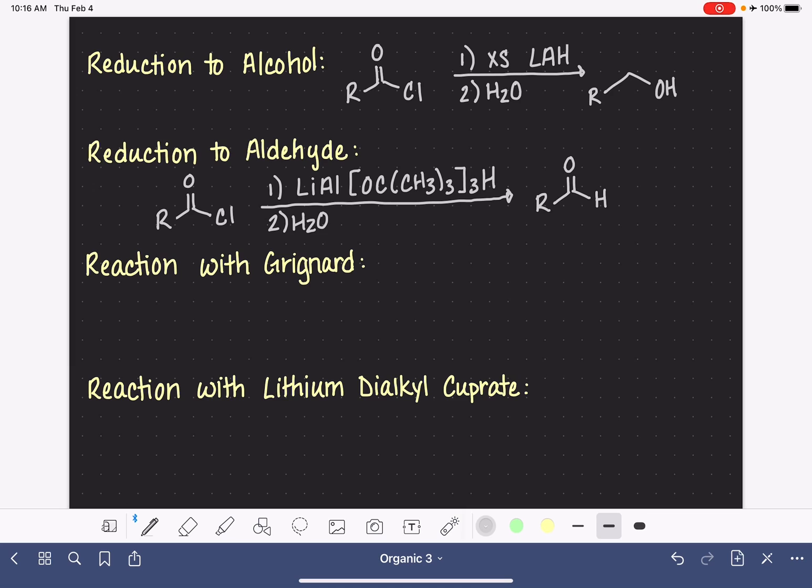We can react our acid chlorides with Grignards. This requires excess Grignard or two equivalents of a Grignard. I'm going to use an MgBr Grignard. Also followed step 2 with water or step 2 H3O+. This is going to put two alkyl groups from the Grignard onto the carbonyl carbon.